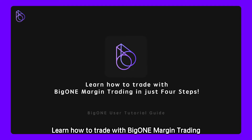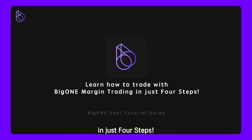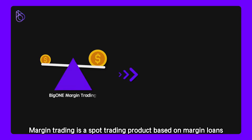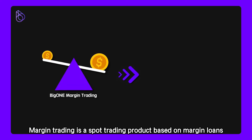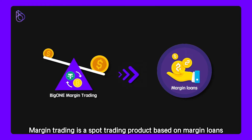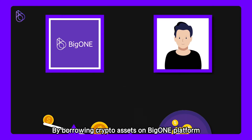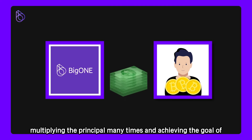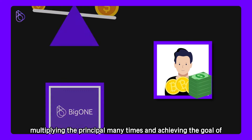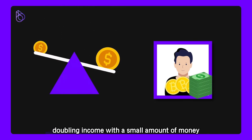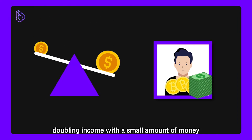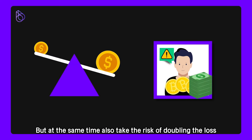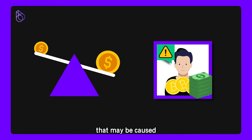Learn how to trade with BigOne Margin Trading in just 4 steps. Margin Trading is a spot trading product based on margin loans. By borrowing crypto assets on the BigOne platform, users can expand the range of tradable assets, multiplying the principal many times and achieving the goal of doubling income with small amounts of money. But at the same time, also take the risk of doubling the loss that may be caused.